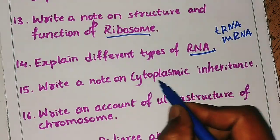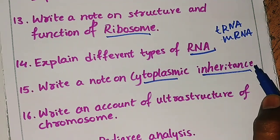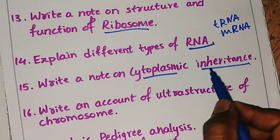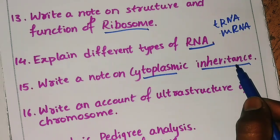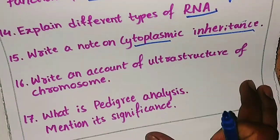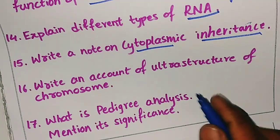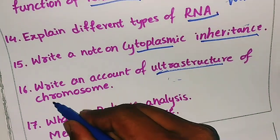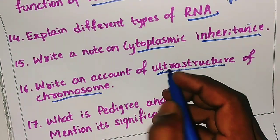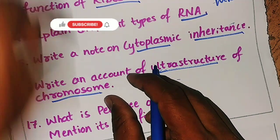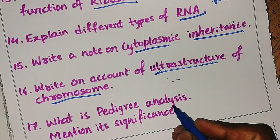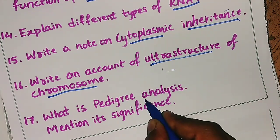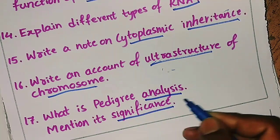There are two types of inheritance, and you need to write about cytoplasmic inheritance. The sixteenth question is: write an account on the ultrastructure of chromosome — write the definition of chromosome and explain its parts. The seventeenth question is: what is pedigree analysis — mention its significance.